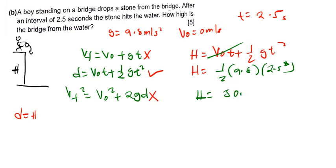If you want you can say 30.625, but I have rounded off to 30.63 meters. So that is how high the bridge is from the water to where the boy was standing. So it was 30.63 meters. That is it for this type of free-fall motion question.